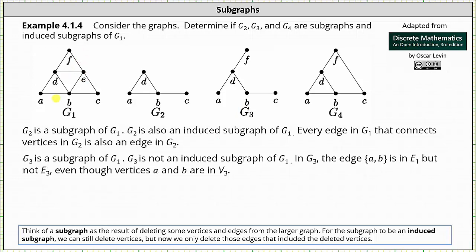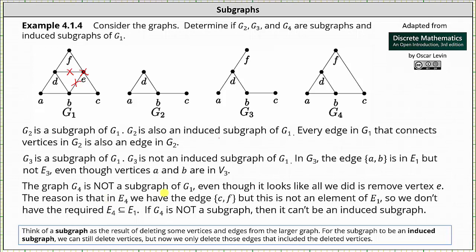Now let's take a look at the graph G4. This is where we have to be careful about the informal notes. Notice to form the graph G4 from G1, we delete vertex E, as well as edge DE and edge BE. So it may appear as if G4 is a subgraph of G1, but it's actually not, because if we take a close look at G4, notice how the set of edges of G4 includes the edge CF, but the edge CF is not an edge in the set of edges of G1, and therefore G4 is not a subgraph of G1. And if it's not a subgraph, it also can't be an induced subgraph.